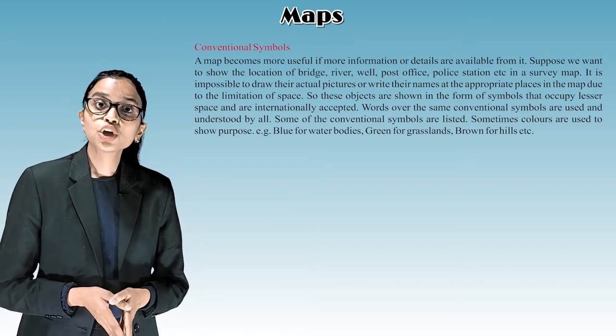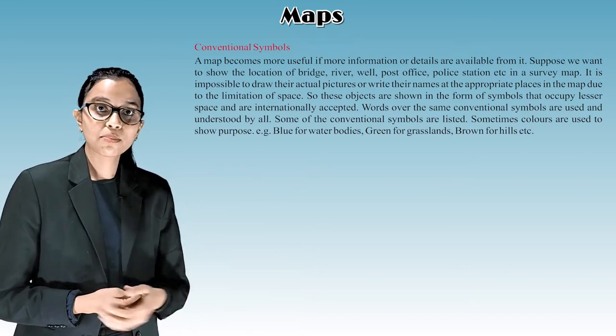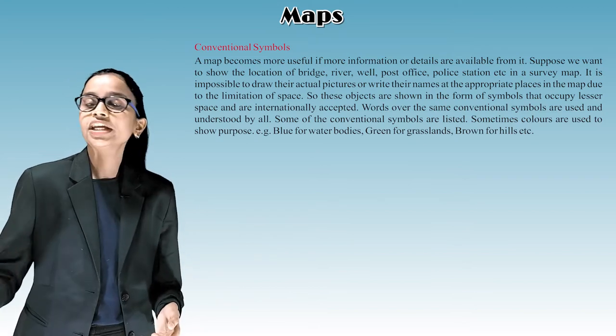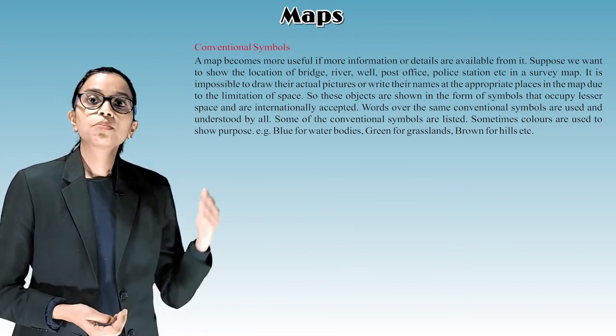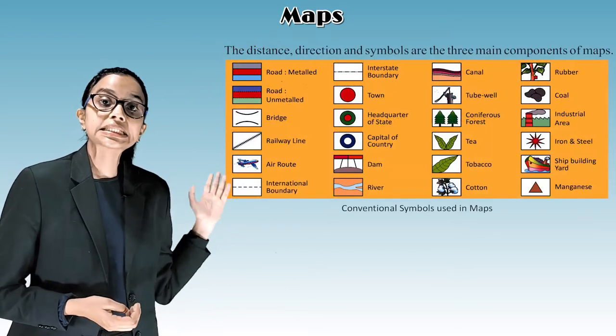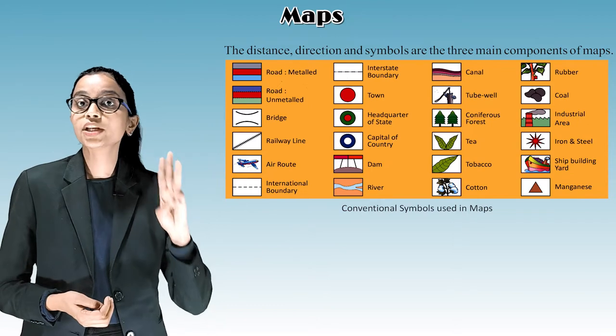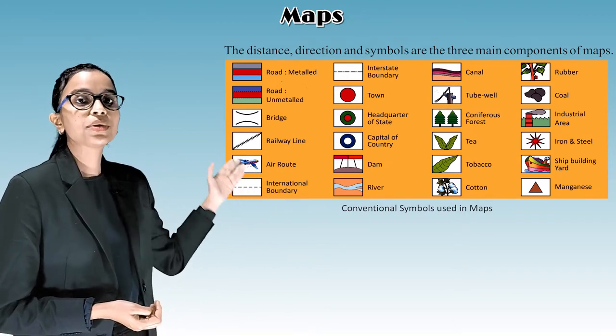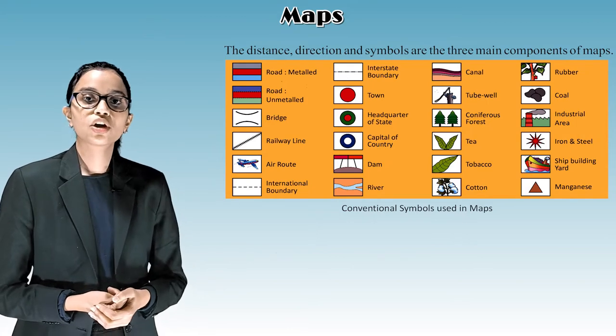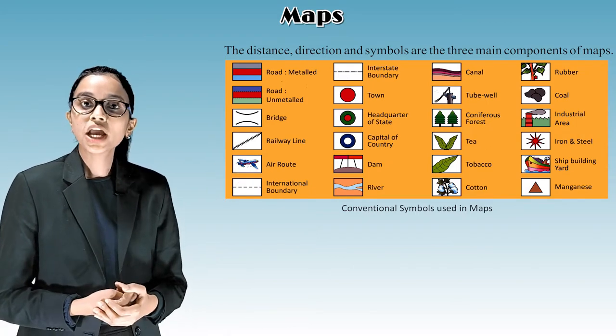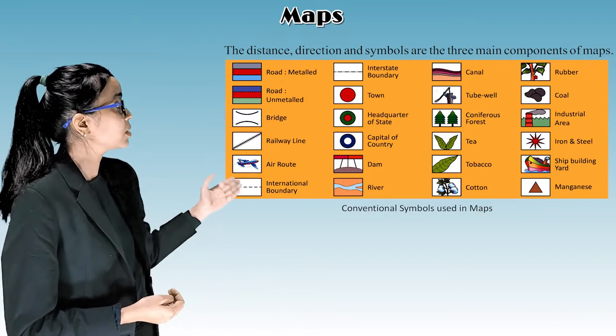Some of the conventional symbols are listed. Sometimes colors are used to show purpose. For example, blue for water bodies, green for grasslands, brown for hills, etc. The distance, direction and symbols are the three main components of map as you've seen in the picture. The picture is of conventional symbols used in maps. See how we use these symbols in the map.